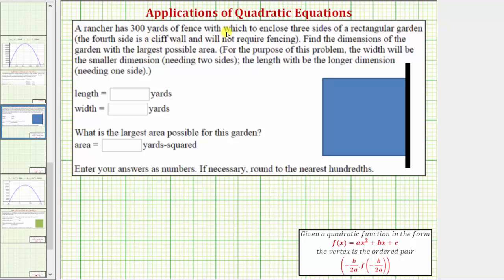A rancher has 300 yards of fence with which to enclose three sides of a rectangular garden. The fourth side is a cliff wall and will not require fencing. Looking at our diagram here, we'll let this black side be the side where there's a cliff. And so if the rancher has to fence these three sides, we're asked to find the dimensions of the garden with the largest possible area.